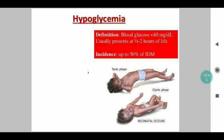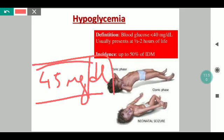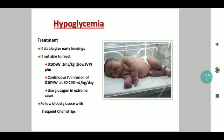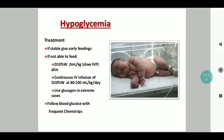The operational definition of hypoglycemia, as per the latest edition of Cloherty's Manual of Neonatology, is a glucose level of less than 45 mg per deciliter. Anything less than 45 mg/dL warrants correction. Treatment involves initiating early feeds if the baby is stable; if not, secure an IV line immediately and give 2 ml per kg slow IV bolus, then continue infusion at 80 to 100 ml per kg per day, and in very severe cases use glucagon. Serial glucose monitoring is also to be followed.